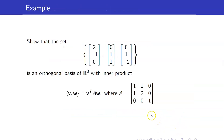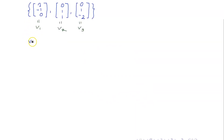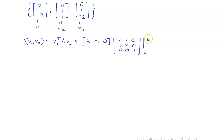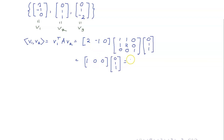For example, let us show that this set is an orthogonal basis of R3 with respect to a specific inner product — the inner product generated by matrix A. Here are my three vectors. First, let us compute the inner product of V1 and V2, which equals V1-transpose times A times V2. V1-transpose is (2, −1, 0). Multiplying by A gives the row (1, 0, 0), and then dotting with V2 = (0, 1, 1) gives 0.